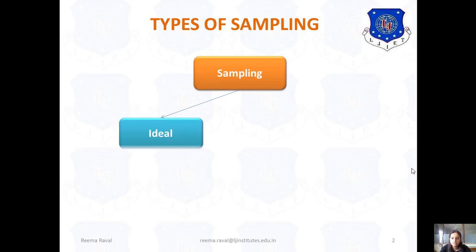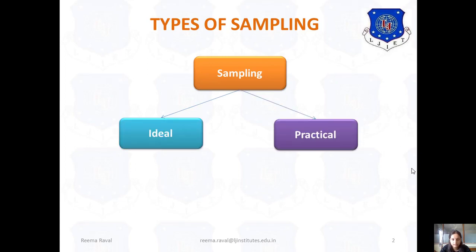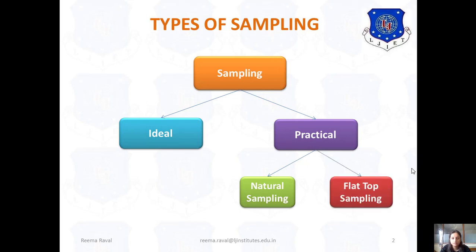In sampling, the first type is ideal sampling and the second type is practical sampling. Now in practical sampling there are another two types: the first one is natural sampling and the second one is flat top sampling. Now we will see each of these sampling types in detail.